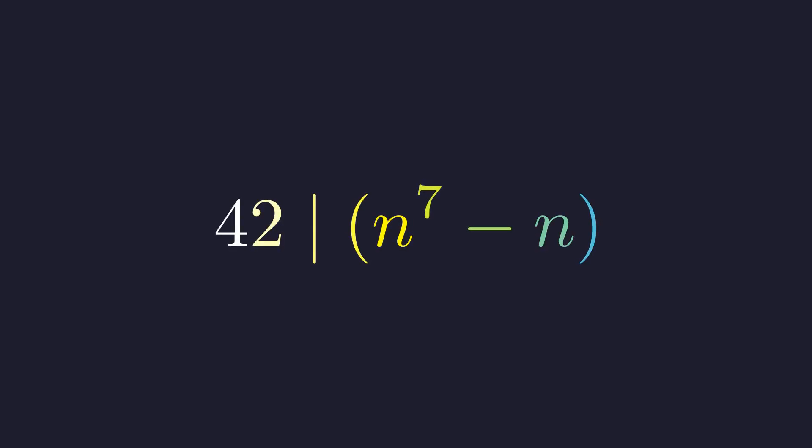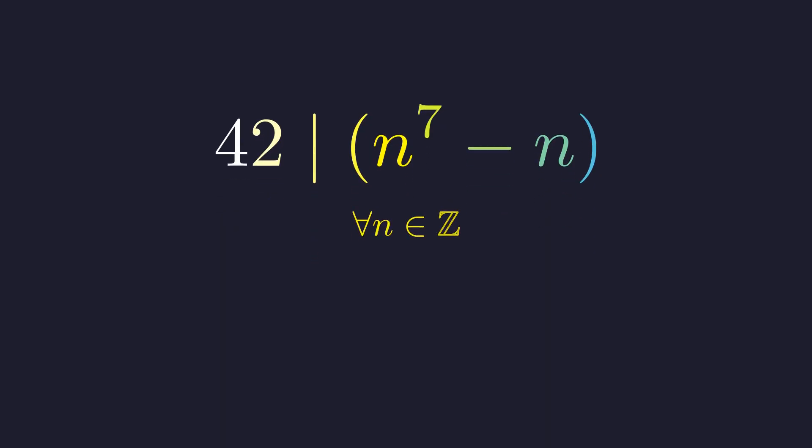Here's a delightful little problem that connects algebra with number theory. We want to show that if you take any integer, raise it to the seventh power, subtract the original number, the result will always be divisible by 42. And when I say any integer, I really mean any - positive numbers, negative numbers, even zero.